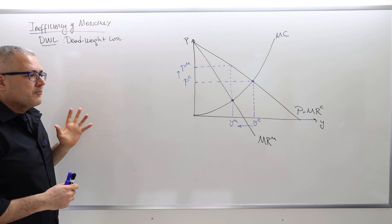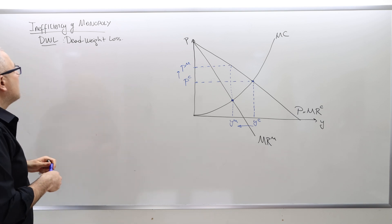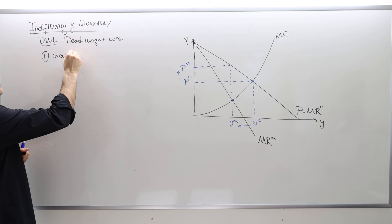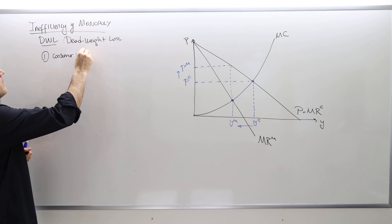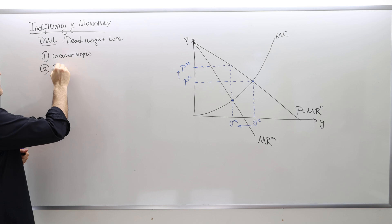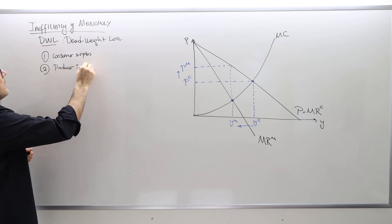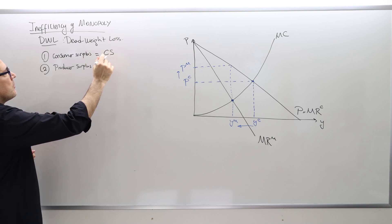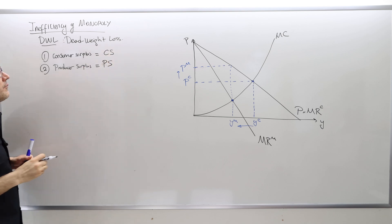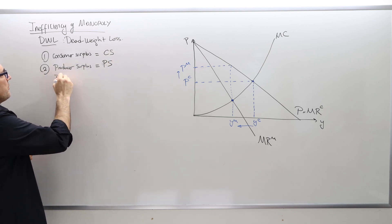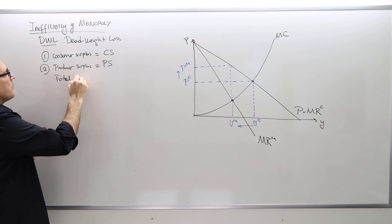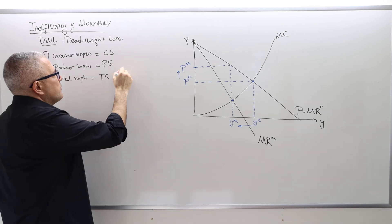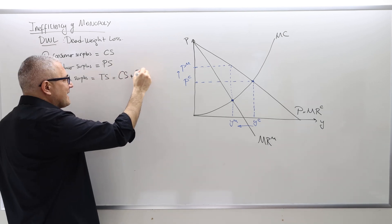To be able to calculate deadweight loss, we need consumer surplus — I'm going to denote that as CS — and producer surplus, PS. And then there's a third notion, total surplus, TS, which by definition equals consumer surplus plus producer surplus.